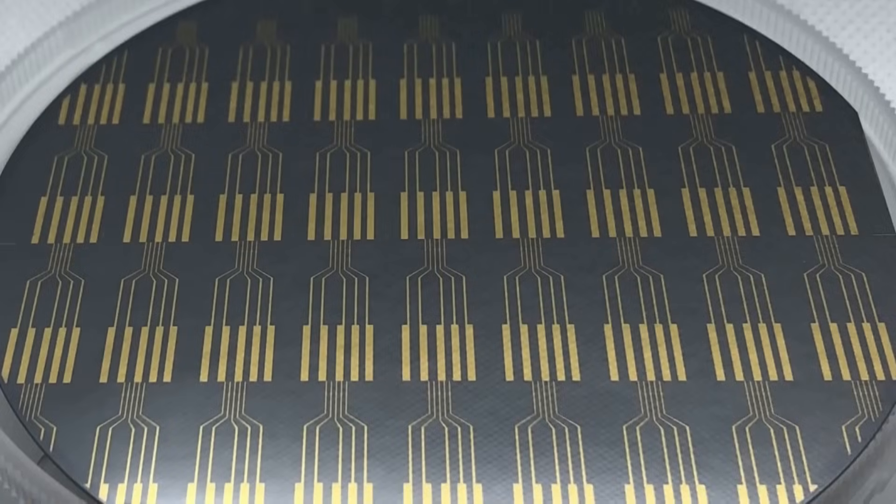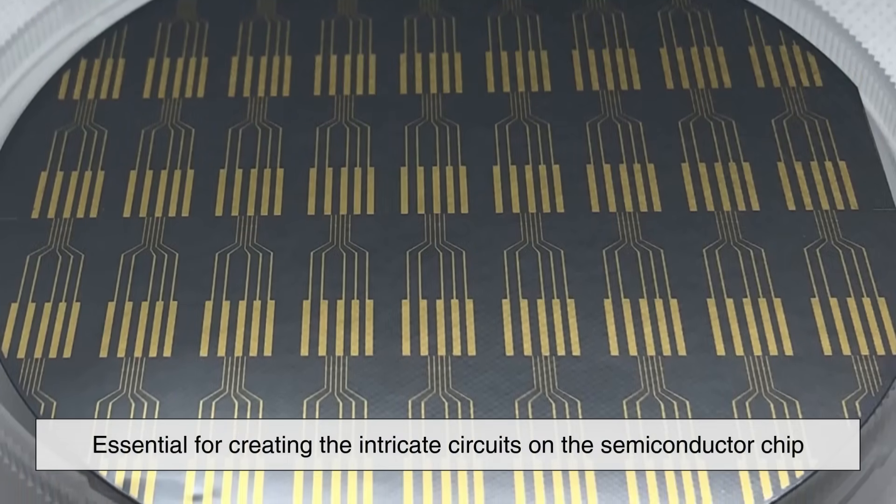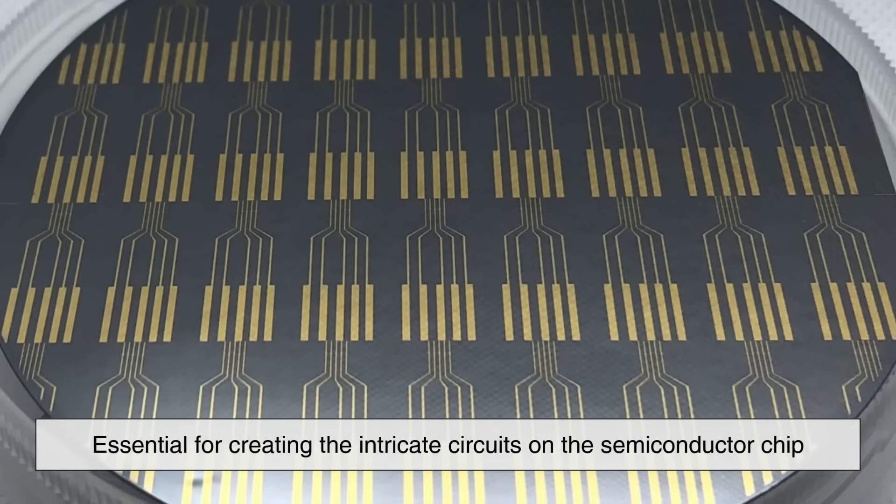Once the wafers are prepared, the process of photolithography begins, which is essential for creating the intricate circuits on the semiconductor chip.